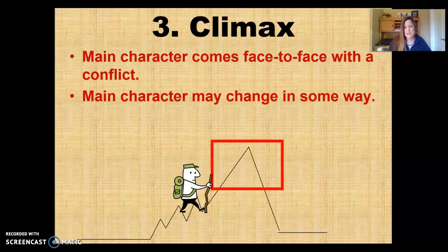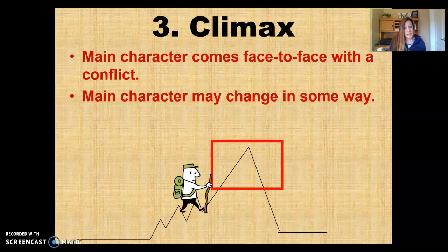Now the third part of the plot is the climax. This is where the main character comes face-to-face with a conflict, and sometimes it's really hard to figure out what that point is. But usually the main character may change in some way. That's why we did so much work last week on characterization and looking at character change—because that can really help us pinpoint where the climax in the story really is.